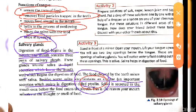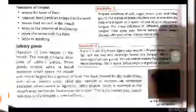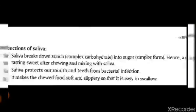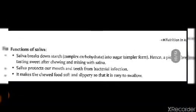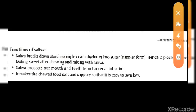Saliva is secreted even before food enters the mouth. This is why your mouth salivates at the thought or smell of food. The main function of saliva is to break down starch — complex carbohydrates — into simpler forms. This means digestion of carbohydrates begins right in the mouth.